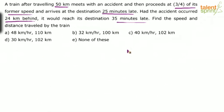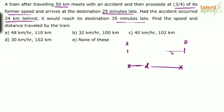Let us assume this is the starting point and this is the destination, with the distance between them being D — that's what we need to find. The train covers the path, and after 50 kilometers the accident takes place. So this portion is 50 kilometers and the remaining part is D minus 50 kilometers. For the first 50 kilometers you are running at regular speed S.